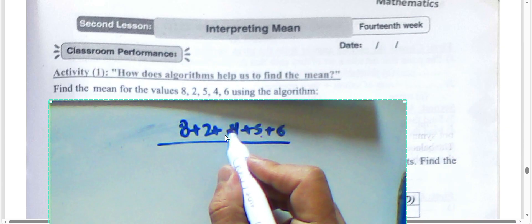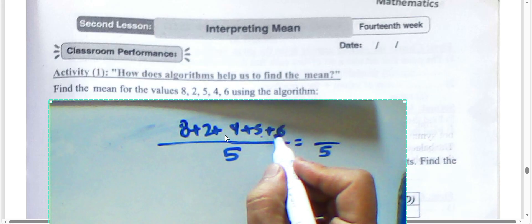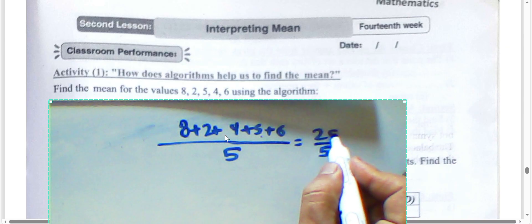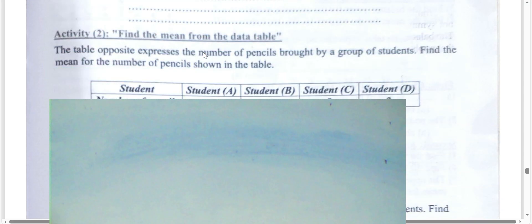We will now study the mean. The mean equals the sum of all values divided by the number of values. To find the mean of eight, two, four, five, six: add them together — six plus five is eleven, plus four is fifteen, plus two is seventeen, plus eight is twenty-five. Twenty-five divided by five equals five. The mean is five.